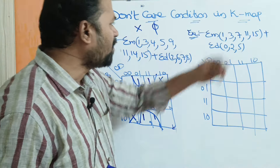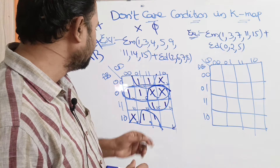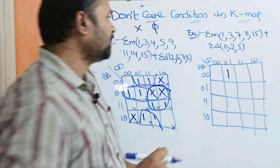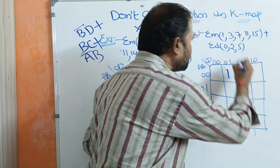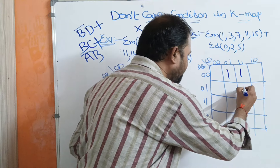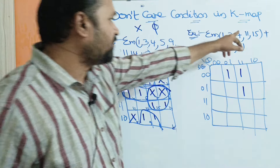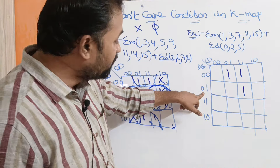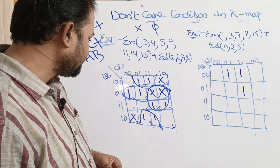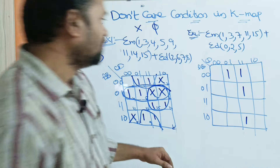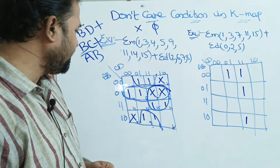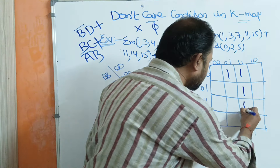Sigma M of 1, 3, 7, 11, 15. Minterm 1 is this cell — output is 1. Minterm 3 is this cell — output is 1. Minterm 7 is this cell — input combination 0,1,1,1, output is 1. Minterm 11: counting 8,9,10,11 — this cell, output is 1. Minterm 15 is this cell — output is 1.